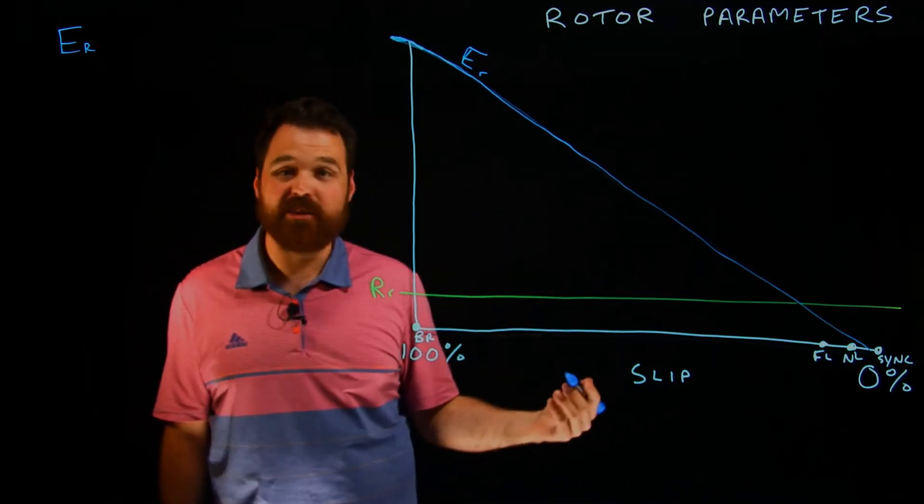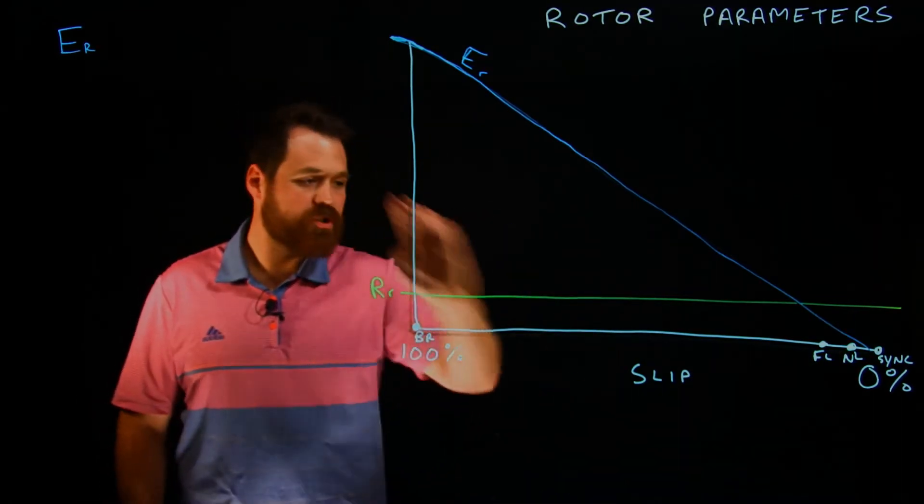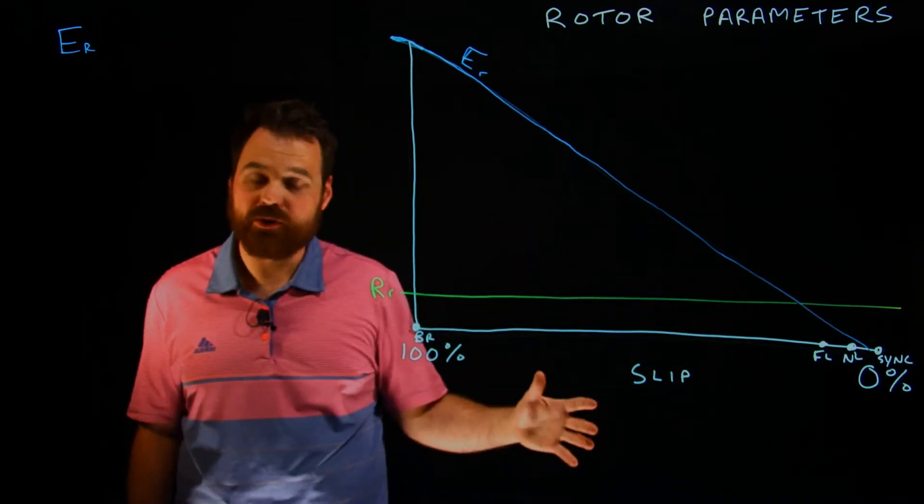So my voltage of my rotor decreases as my slip decreases as well. So we would actually call those directly proportional. So the more or the less slip, the less voltage I'm going to have.